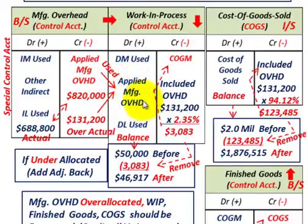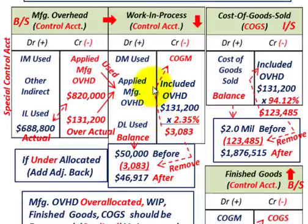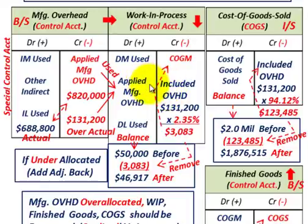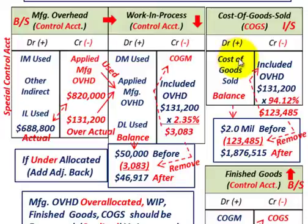So that's the summary of what's going on here. We have two different methods for using the proration method for either under-allocated or over-allocated overhead in the adjustments to the accounts. The accounts involved are the manufacturing overhead control account, work in process, finished goods, and cost of goods sold.